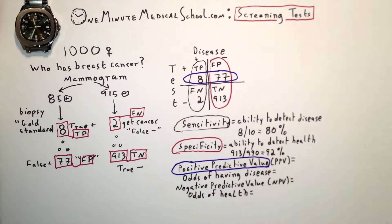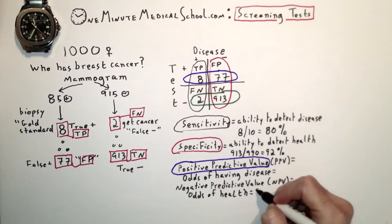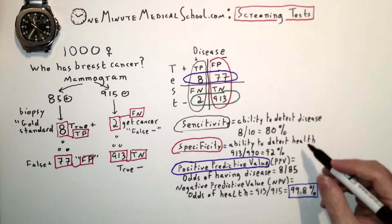Negative predictive value, odds of health in a negative test. 913, 915, 99.8 percent. Pretty good.